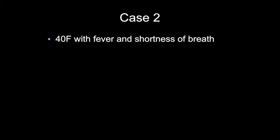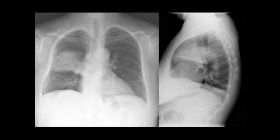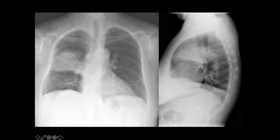Case two: 40-year-old female with fever and shortness of breath. Heart and mediastinum are okay, no shift, no abnormal contours — there's some calcification in the aorta. Comparing lungs on both sides, there's clearly something very abnormal in the right lung. No pleural effusions or pneumothoraces, no free air. Soft tissues and bones are okay. Checkpoints — apices, hyla, retrocardiac, retrodiaphragmatic are okay. The main abnormality is here.